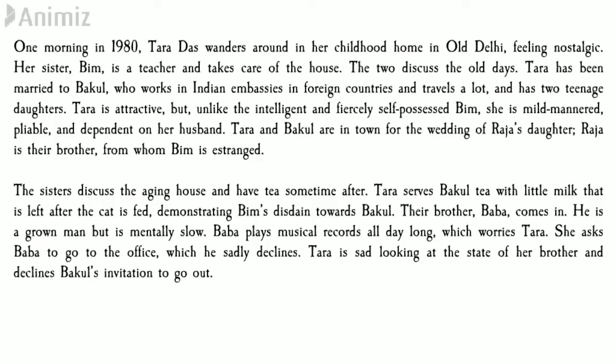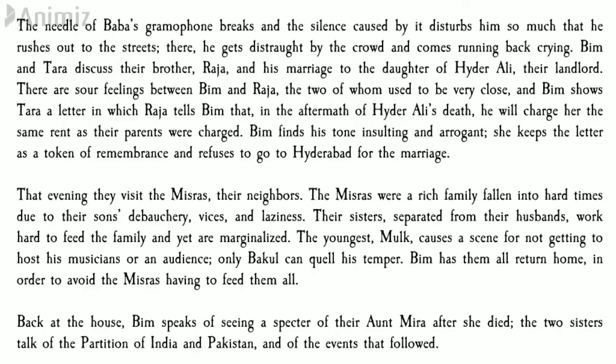In the current scenario, both Tara and Bakul are married with two daughters. Tara is in conversation with her sister Vimla Das — Bim. We can see that Tara is very attractive but, unlike the intelligent and fiercely self-possessed Bim, she is mild-mannered, pliable and dependent on her husband. The novel then sheds some light on Baba, the youngest sibling of the Das family — mentally underdeveloped — and when his gramophone becomes dismantled he goes quite distressed, as he is not mentally capable of thinking like adults.